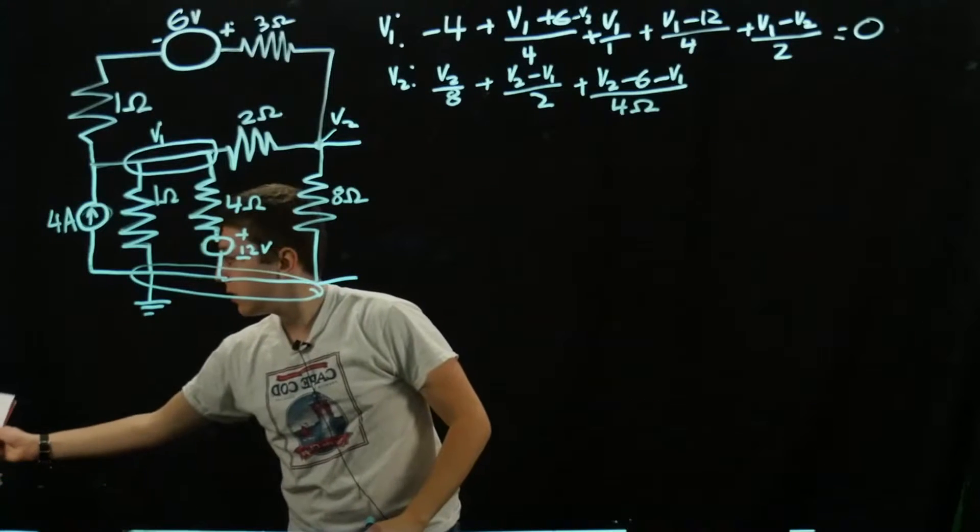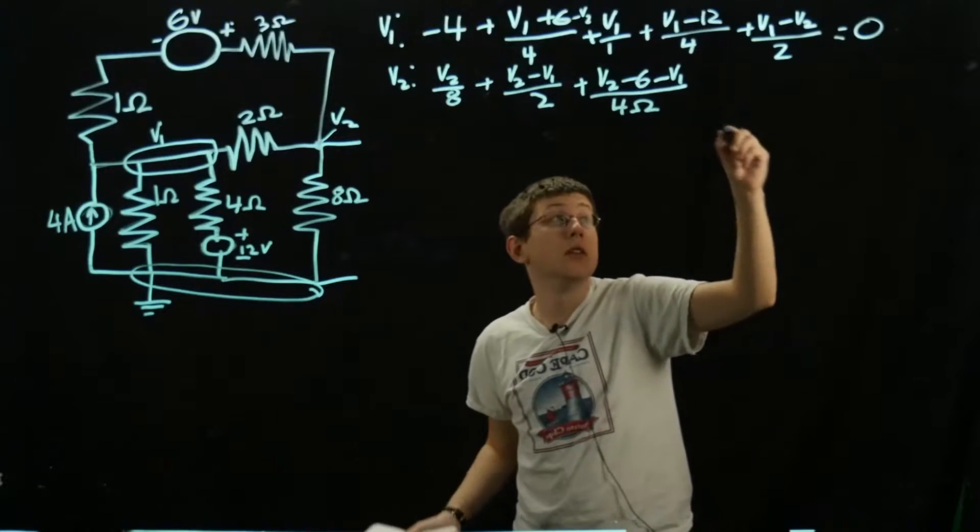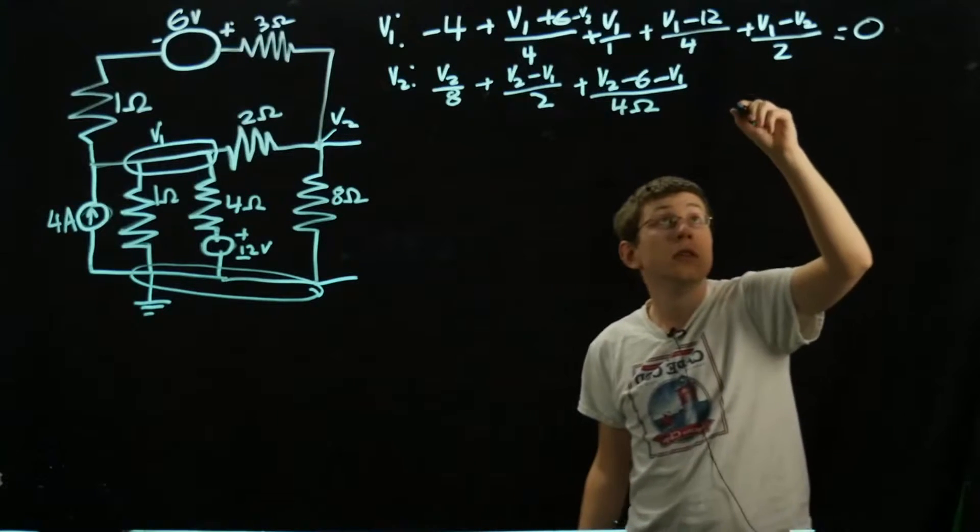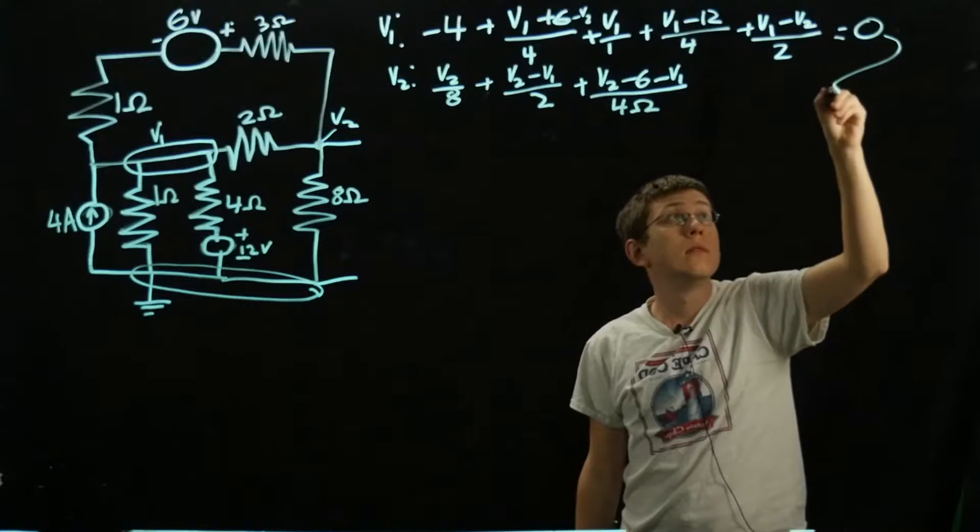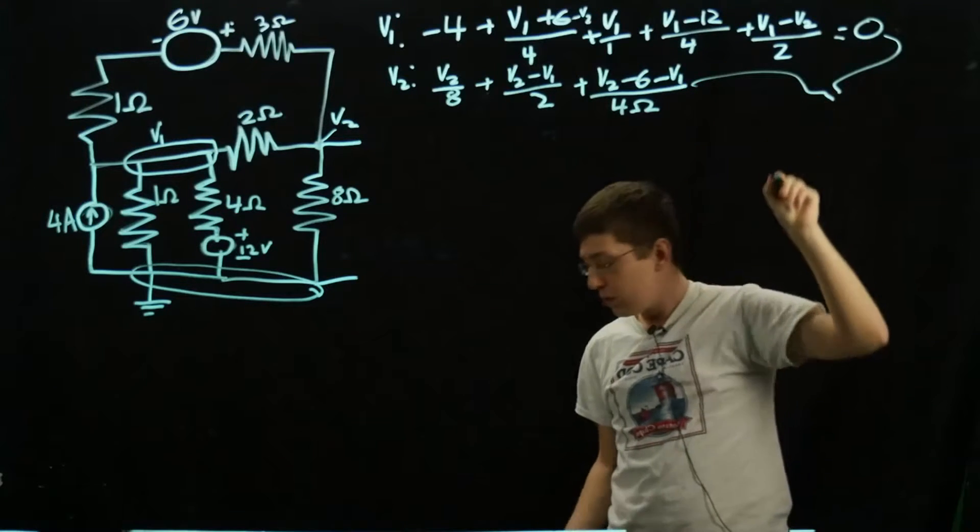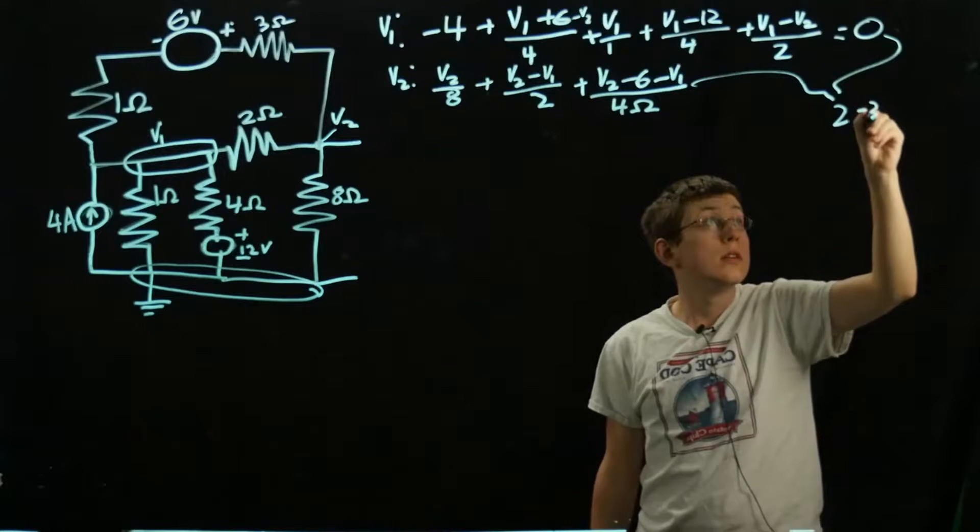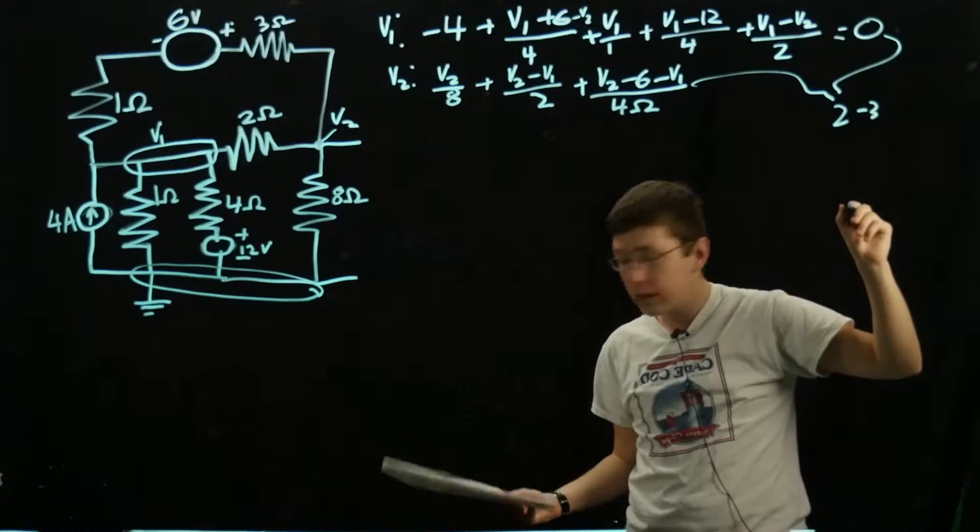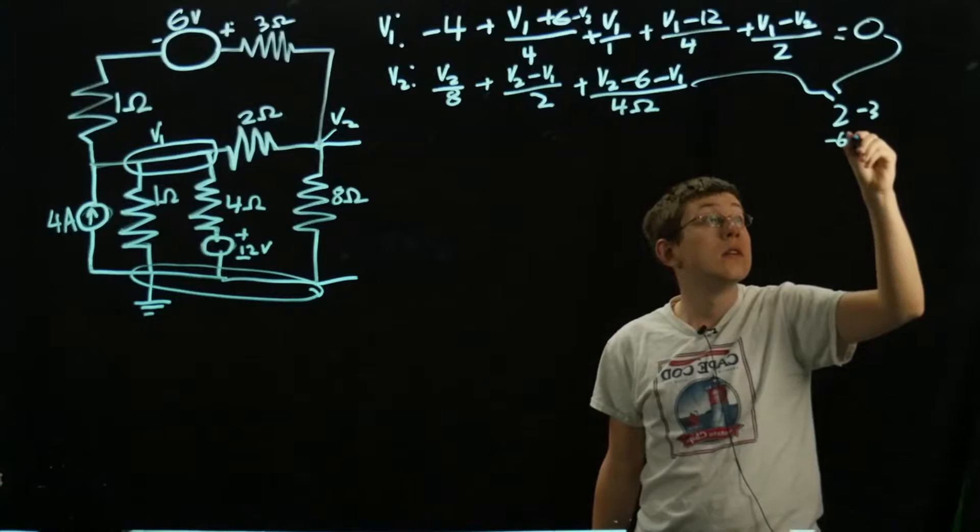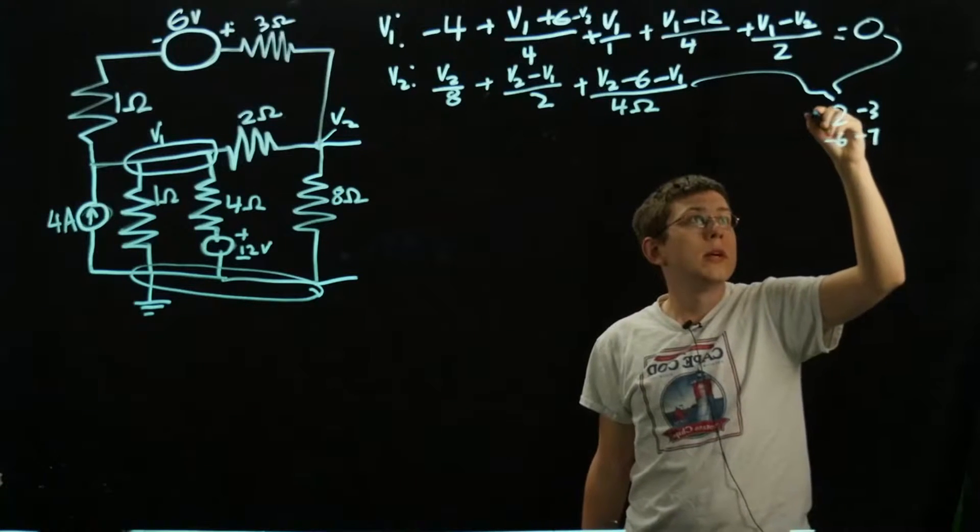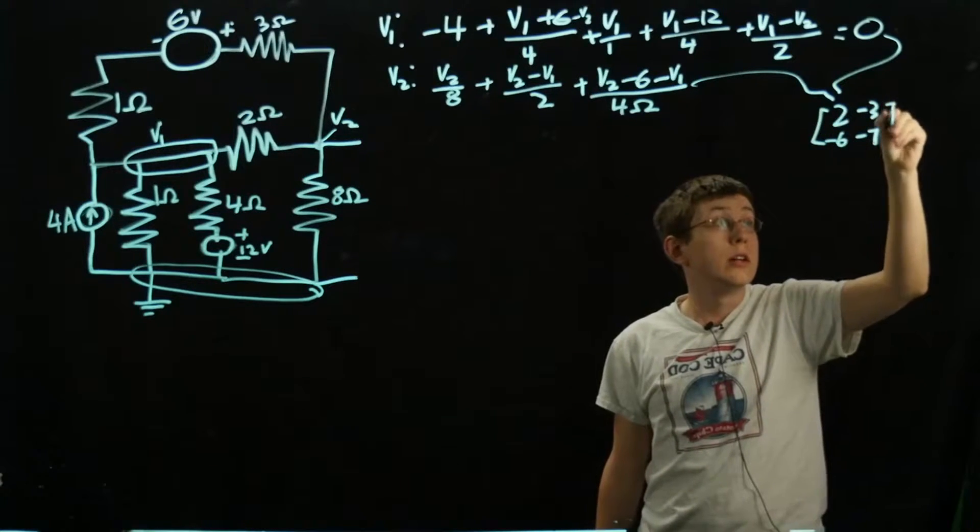When we simplify this into a matrix, we'll have 2, negative 3, negative 6, and negative 7. From here it's just a bit of linear algebra to solve.